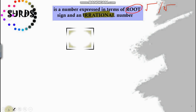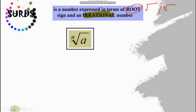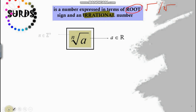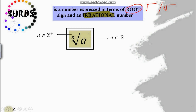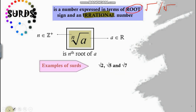So a surd must have this root notation together with the characteristic that it must be an irrational number. Here, 'a' is any real number and 'n' is any positive integer, because we wouldn't have a negative root of something.